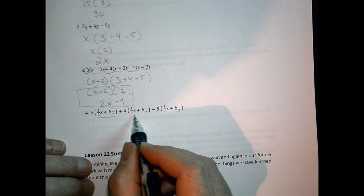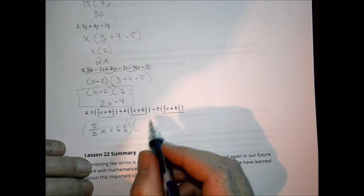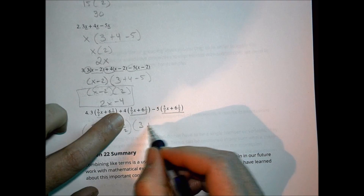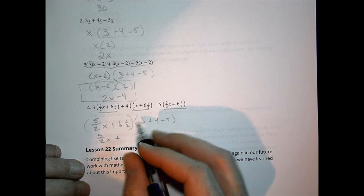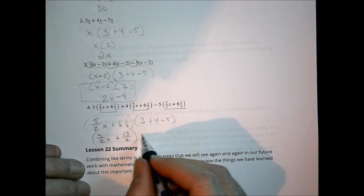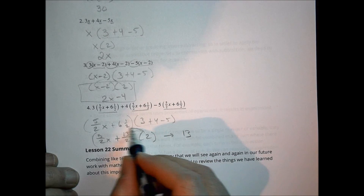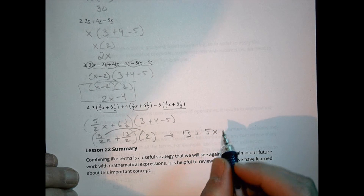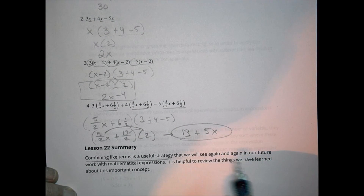Here, the same expression repeats — so (5/2)x plus 6.5 is going to be multiplied by 3 plus 4 minus 5, which we know is 2. Let me rewrite 6.5 as 13/2, since 2 plus 6 is 12 plus 1 is 13 over 2. So 2 times 13/2 equals 13, and 2 times 5/2 equals 5, giving us 5x plus 13. The point is that combining like terms is a useful strategy you'll see again and again in lots of mathematical expressions.